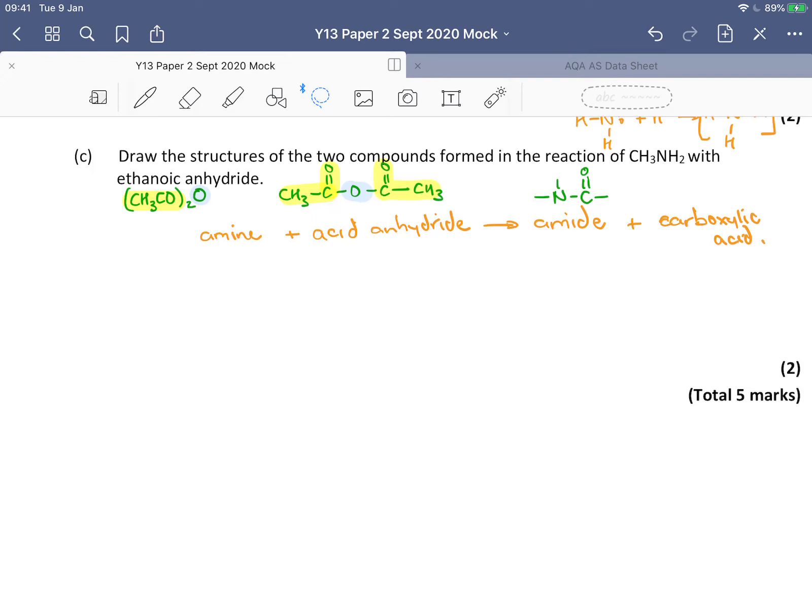Okay, so our amide. So we know, let's take it systematically. Our amine is CH₃NH₂. So let's draw that: CH₃ and then N. And we know that one of the H's stays and one of them is going to get replaced.